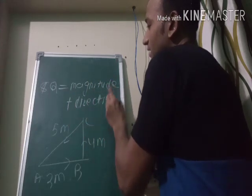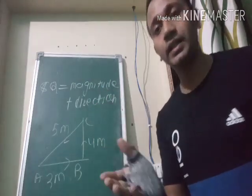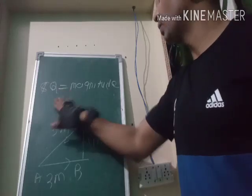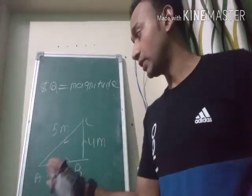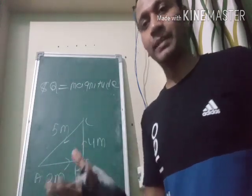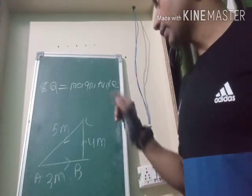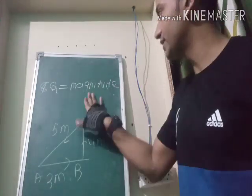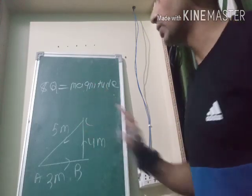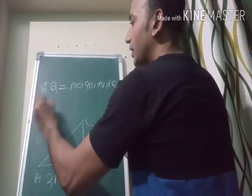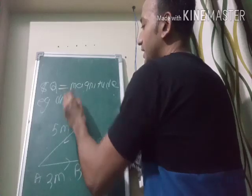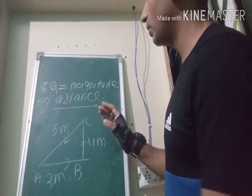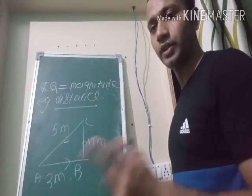A scalar quantity is a physical quantity which is defined only by its magnitude and not by its direction. So we have the concept: a quantity which is independent of direction and depends only on magnitude is called a scalar quantity. An example of a scalar quantity is distance.